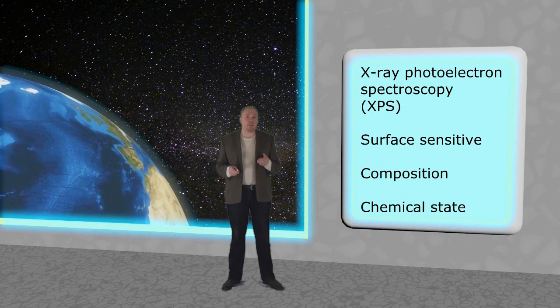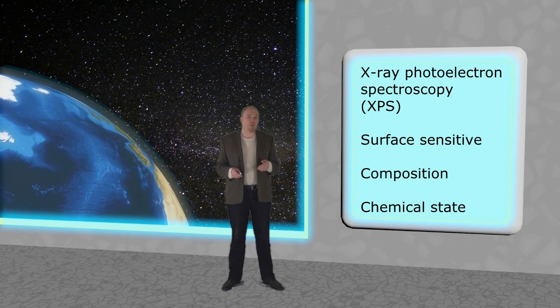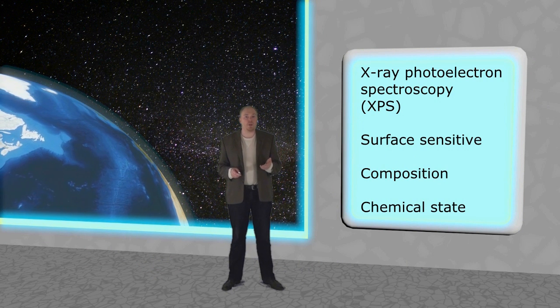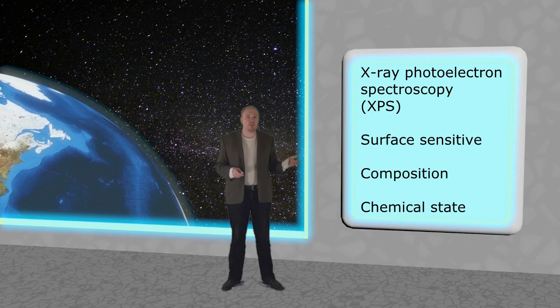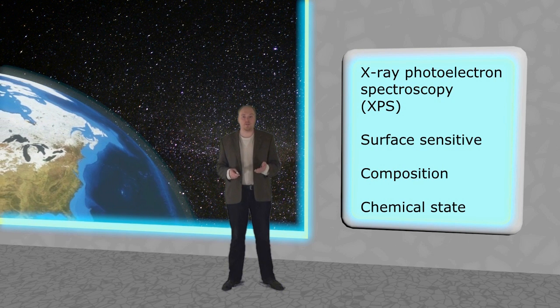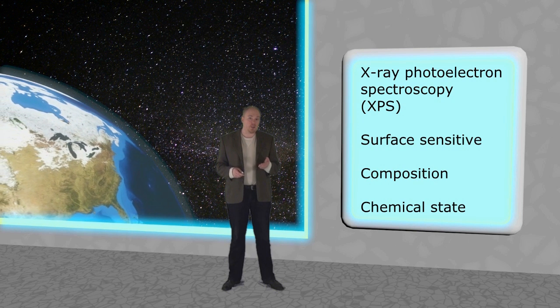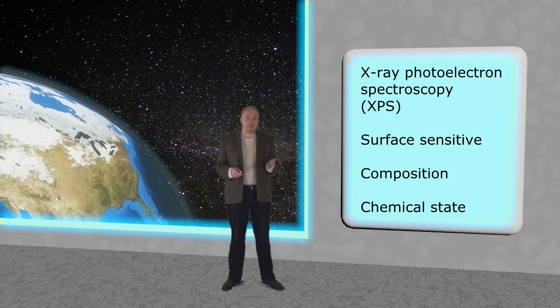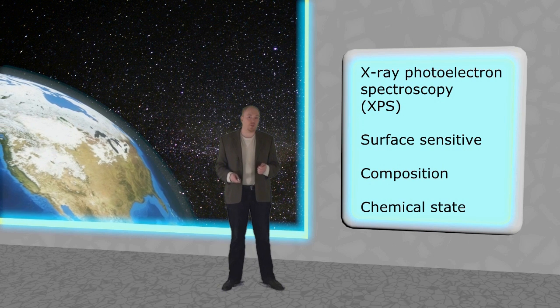This means that if our exciting radiation has a well-defined wavelength, we can get information about the material's composition and even chemical state if we measure the energy of the emitted photoelectrons. The material characterization method that does exactly that is called photoelectron spectroscopy.